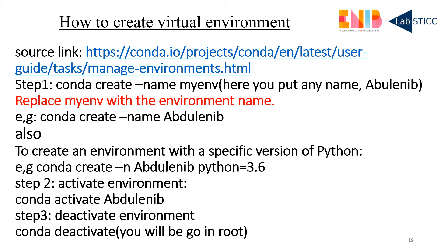If you want to create a virtual environment with a specific Python version, you can type: conda create -n your_env_name python=3.6. You can also use 3.7, 3.8, or 3.9. The other steps will be similar.